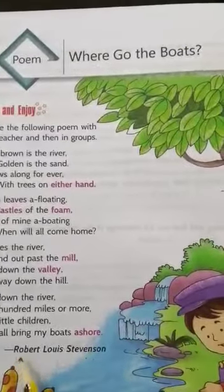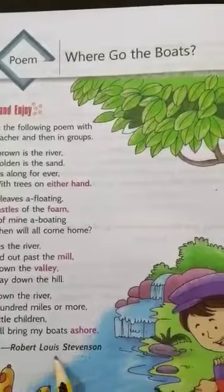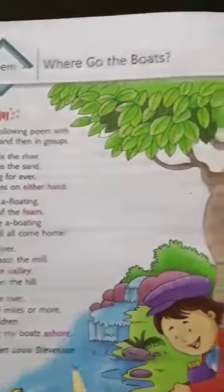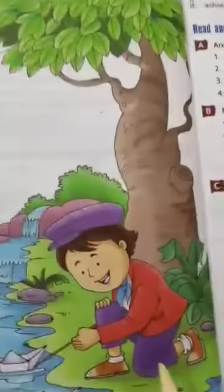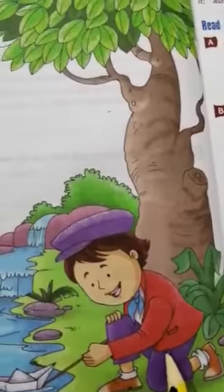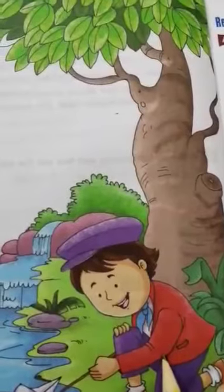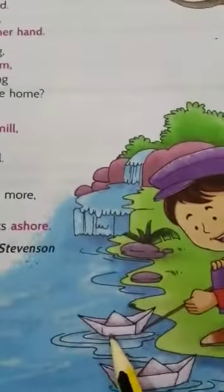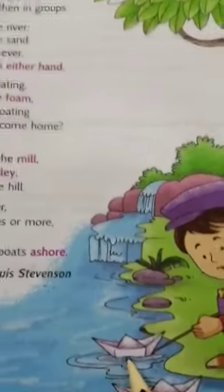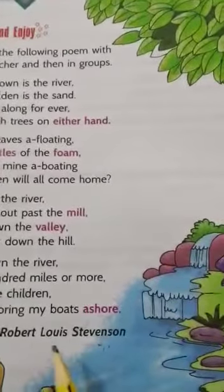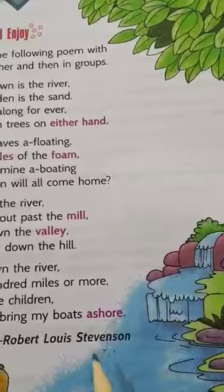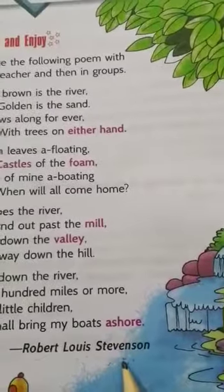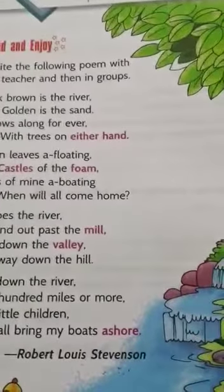Poet Robert Louis Stevenson wrote this poem about a child who was thinking that when we flow the boats in the river, then where go the boats? So poet Louis Stevenson tried to describe the journey of the boats. Let's read.